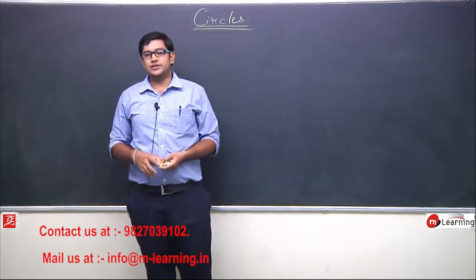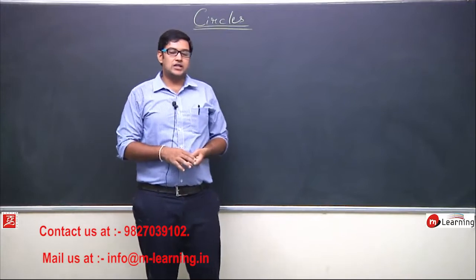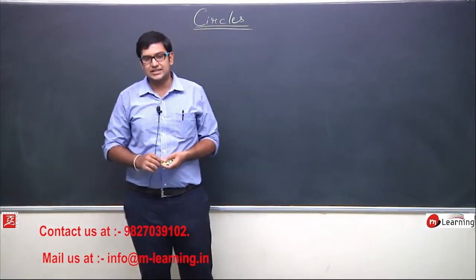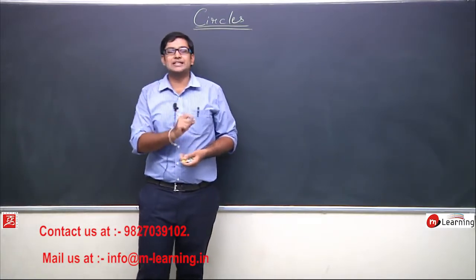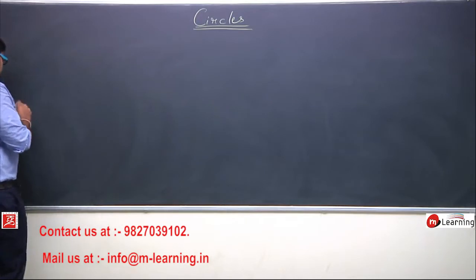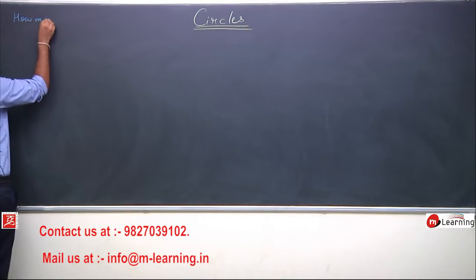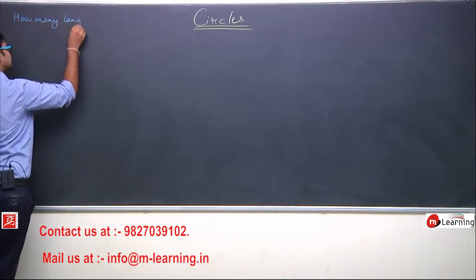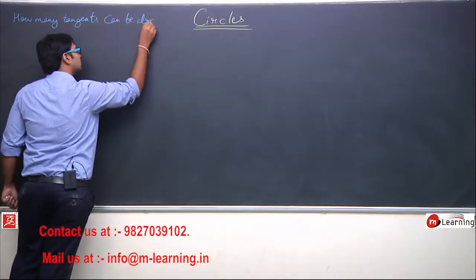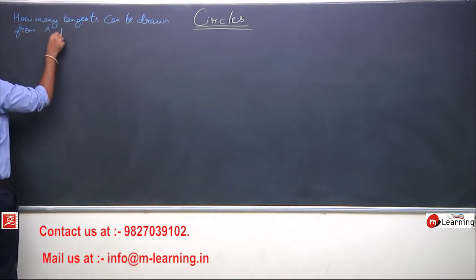We have understood the definition of a tangent and a secant. Tangent ke bare mein humnay kaha that a tangent is a line which touches the circle at a single point, or intersects the circle at a single point. Sirf ek point pe touch karna chahiye. Now let us understand how many tangents can be drawn from a point to a circle.